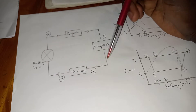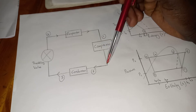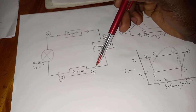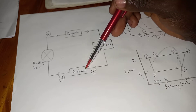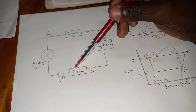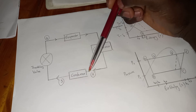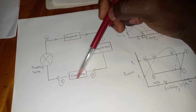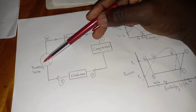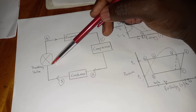The refrigerant flows in the form of vapor, and then here it condenses — meaning it turns from vapor into liquid. Not water, because it's a refrigerant. So it turns into liquid here, and from this point it goes to the throttling valve, where it is already in liquid form.